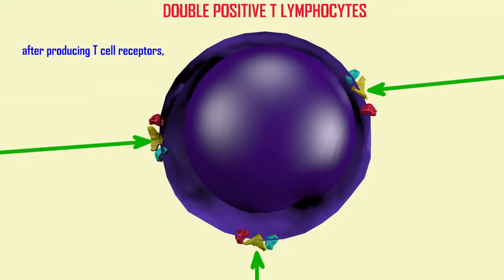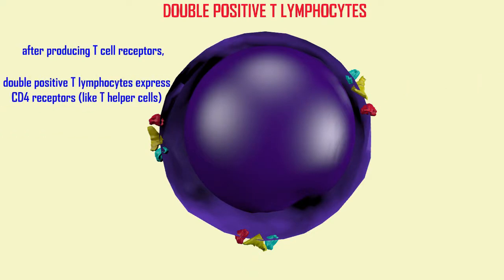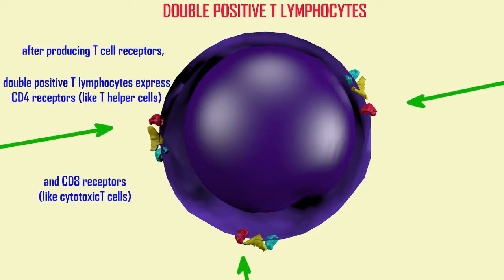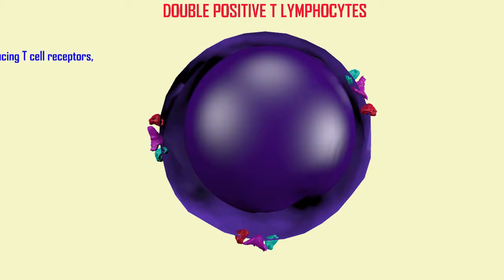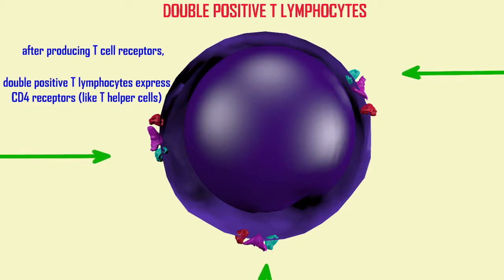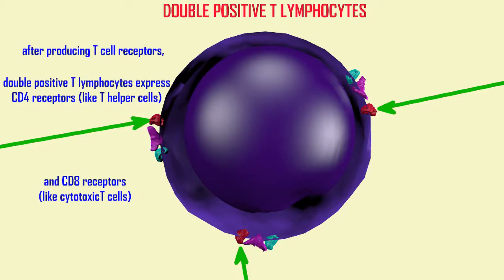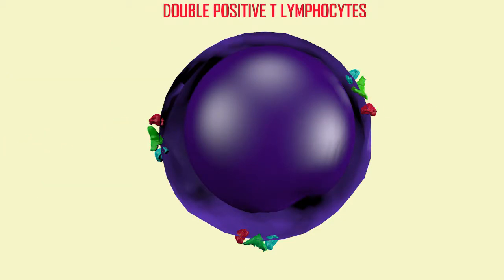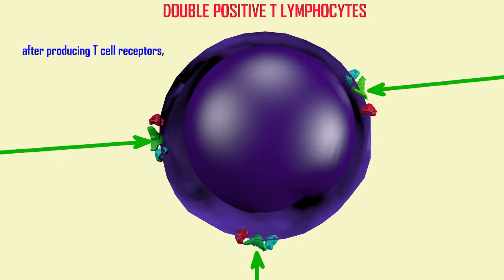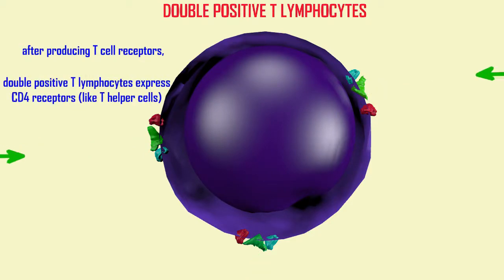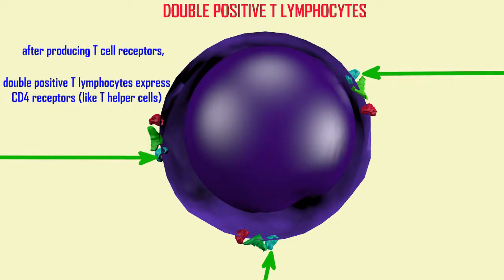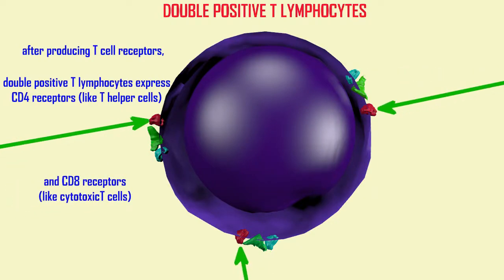These T-cell precursors will express two proteins: both the CD4 receptors, which are typical of the T helper lymphocytes, and the CD8 receptors, which are typical of the cytotoxic T lymphocytes. Therefore, they are referred to as double positive T lymphocytes, possessing the molecules needed to co-stimulate the receptor as it interacts with one of the two classes of MHC proteins.